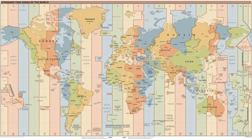Thus, in the UTC time scale, the second and all smaller time units are of constant duration, but the minute and all larger time units are of variable duration. Decisions to introduce a leap second are announced at least six months in advance in Bulletin C, produced by the International Earth Rotation and Reference Systems Service. The leap seconds cannot be predicted far in advance due to the unpredictable rate of rotation of the Earth.